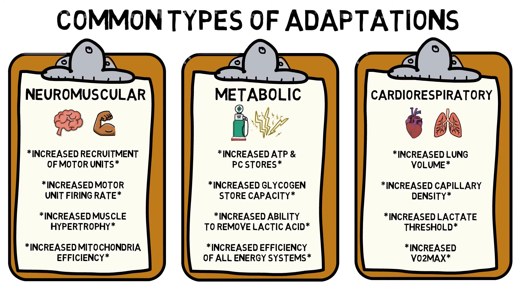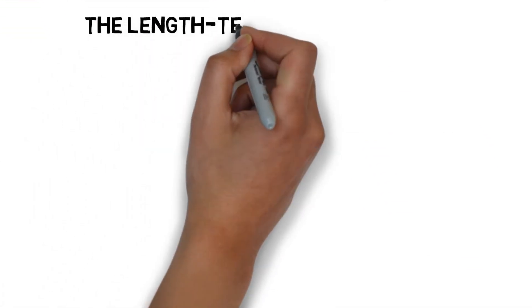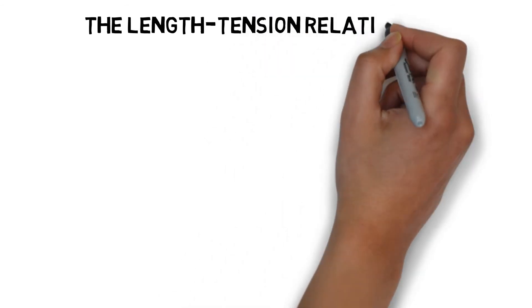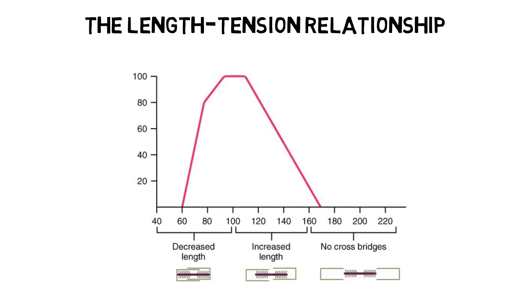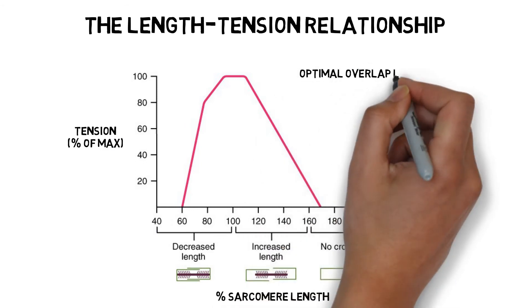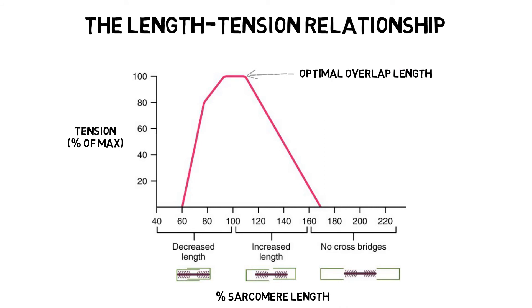It is also important to understand the following concepts in order to maximize the fundamental training principles. The length-tension relationship is the resting length of a muscle and the tension the muscle can produce at this resting length. There is an optimal muscle length at which actin and myosin filaments in the sarcomere have the greatest overlap. This means the myosin can make the maximum amount of connections with actin, resulting in the potential to produce maximal force.